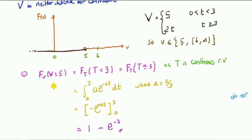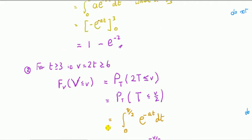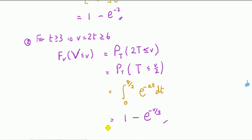So we know that if V is less than or equal to 5, that's the piece of the CDF we're looking at. For the final segment, when T is greater than or equal to 3, that corresponds to V being greater than or equal to 6, because 2 times the minimum value of 3 gives 6.